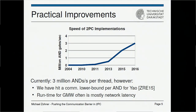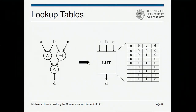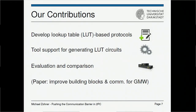For GMW, the runtime is mostly dominated by latency. Since you have to perform so many interaction rounds, as soon as you go to an internet setting, you will just wait for messages. So a natural question is whether we can move from small AND gates and Boolean circuits to bigger components such as lookup tables, and this is the focus of the remainder of this talk.